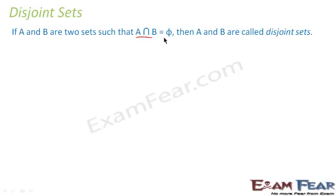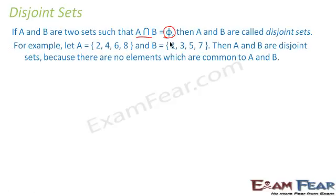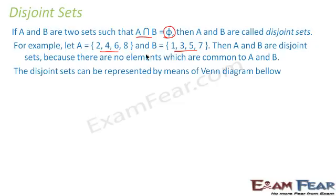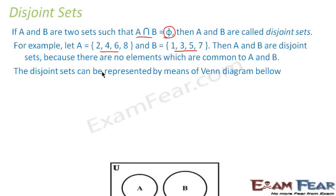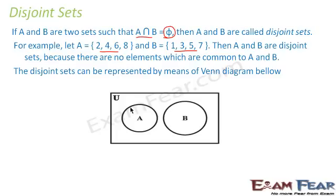Disjoint sets: if A and B are two sets such that A intersection B is the empty set — there is no common element — then they are called disjoint sets. For example, if A = {2, 4, 6, 8} and B = {1, 3, 5, 7}, there is no common element, so they are disjoint. In a Venn diagram, disjoint sets are shown as two separate, non-overlapping circles because there is no intersection.